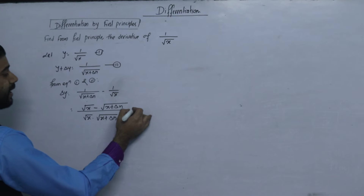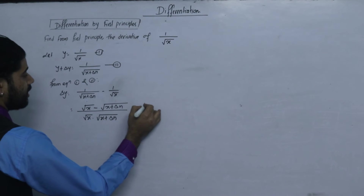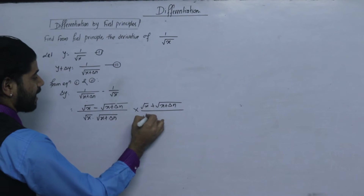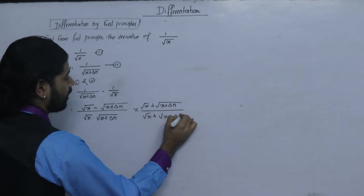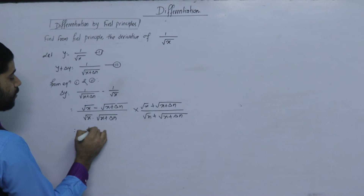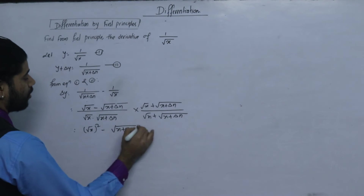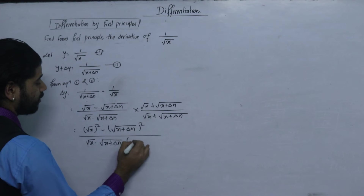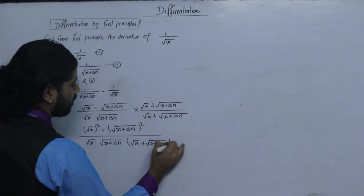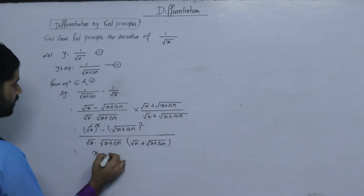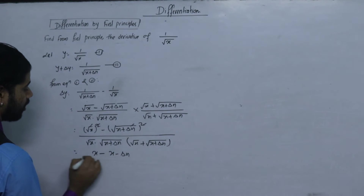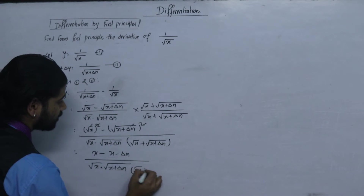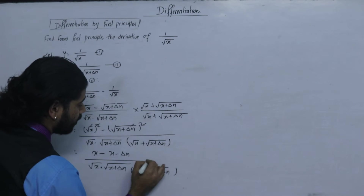In the numerator we have x plus delta x minus x. Using the identity (a minus b)(a plus b) equals a squared minus b squared for rationalization, we get the numerator as delta x, and the denominator becomes root under x into root under (x plus delta x) times (root under x plus root under (x plus delta x)).